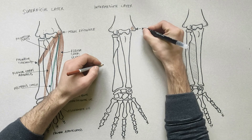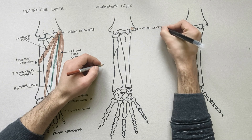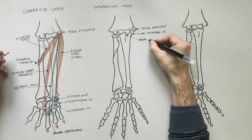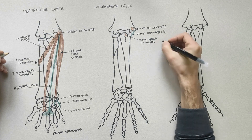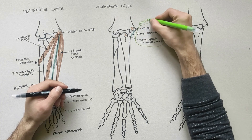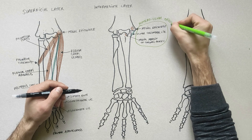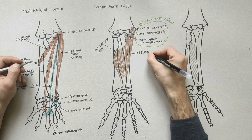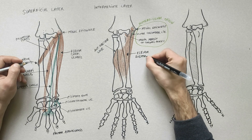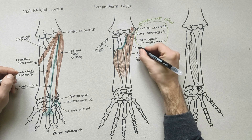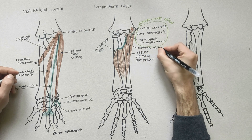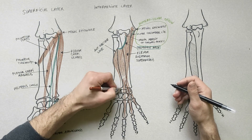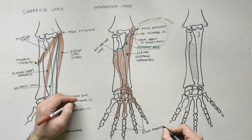The flexor digitorum superficialis has two origins. The humero-ulnar origin is from the medial epicondyle of the humerus, the ulnar collateral ligament, and the medial margin of the coronoid process of the ulna. The radial origin is from the anterior oblique line of the radius. A tendinous arch joins its two origins.